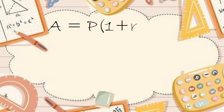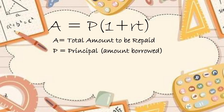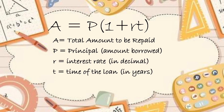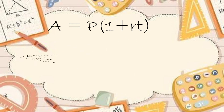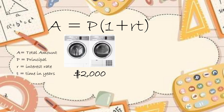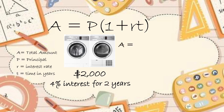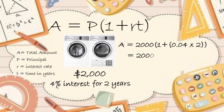Now how do we calculate simple interest? There is a formula where A equals P times 1 plus RT, where P is the amount of the loan or the principal, R is the interest rate written as a decimal, and T is the amount of time in years. So let's suppose that I buy a $2,000 set of washer and dryer and with the appliance company I get a payment plan for 4% interest rate for two years. Chances are that this interest is simple interest. So we do some quick math where A equals 2,000 times 1 plus 0.04 times 2, which equals 2,000 times 1 plus 0.08, which is 2,000 times 1.08, which is 2,160.